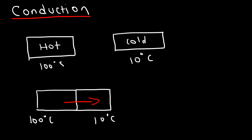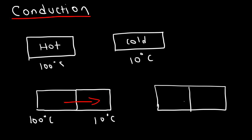This net flow of heat will continue until the temperatures are the same — for example, both reaching 55 degrees. At that point we have thermal equilibrium. Heat is still flowing from both sides, but the net flow is zero. Make sure you understand: heat flows from an object at high temperature to an object at low temperature. It always flows from hot to cold.